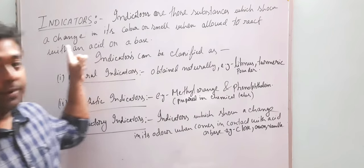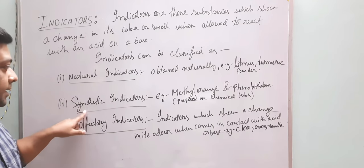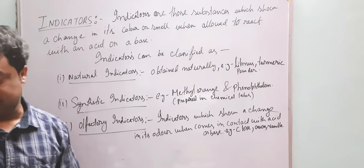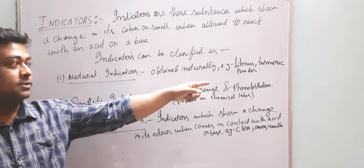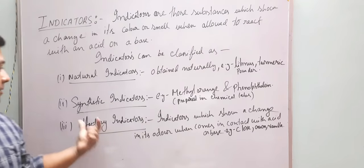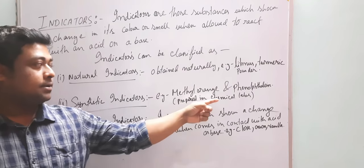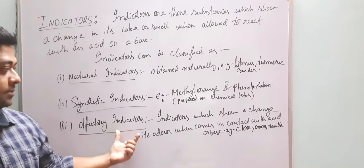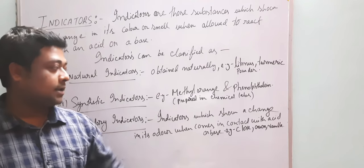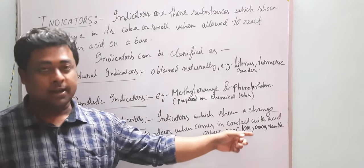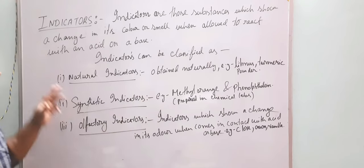From these physical changes we can conclude whether the particular substance is an acid or base. Indicators can be further classified as natural indicators, synthetic indicators, and olfactory indicators. Natural indicators are those obtained naturally — for example, litmus and turmeric powder. Synthetic indicators are prepared in chemical labs — for example, methyl orange and phenolphthalein. Olfactory indicators show a change in odor when in contact with an acid or base — examples include clove, onion, and vanilla.